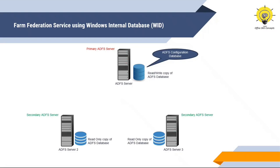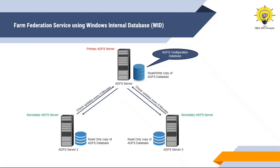In this type of deployment, if you need to make any changes, you will have to log in to the primary ADFS server, because only the primary ADFS server holds a read and write copy of the database. All changes will be done only on the primary ADFS server and then replicated to all secondary ADFS servers. The secondary ADFS servers connect to the primary ADFS server every five minutes to replicate the ADFS configuration database.